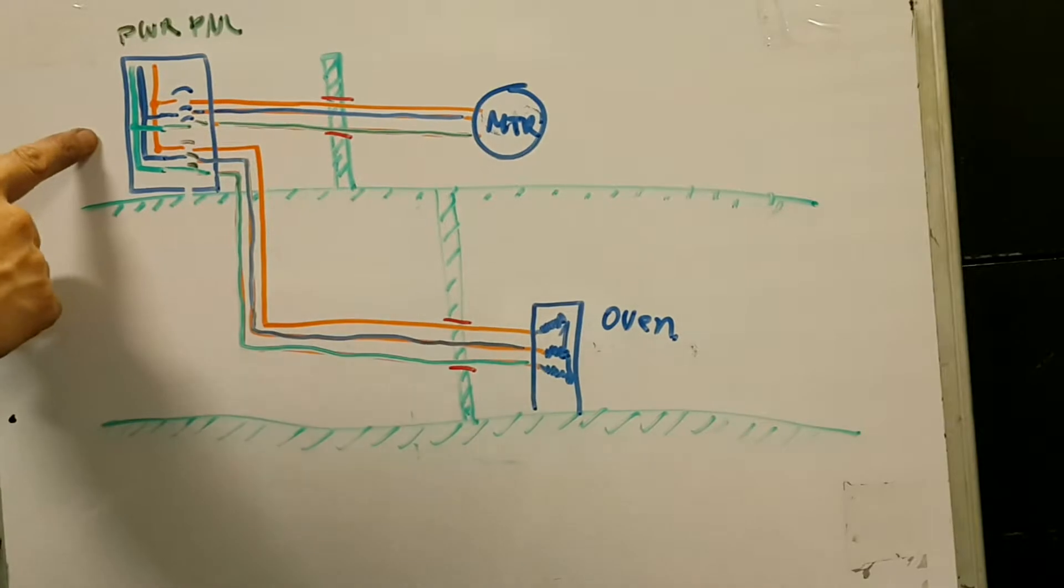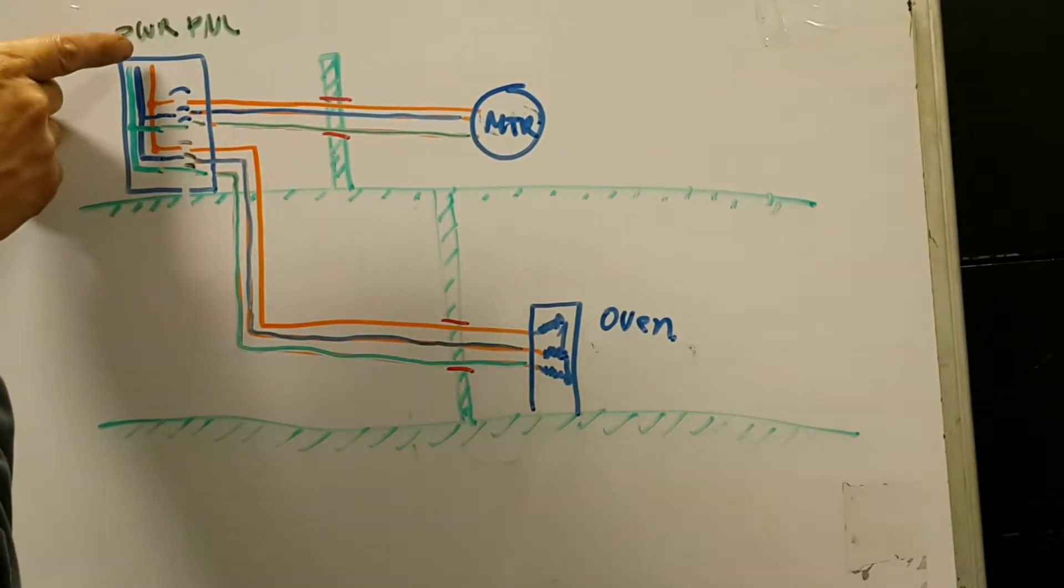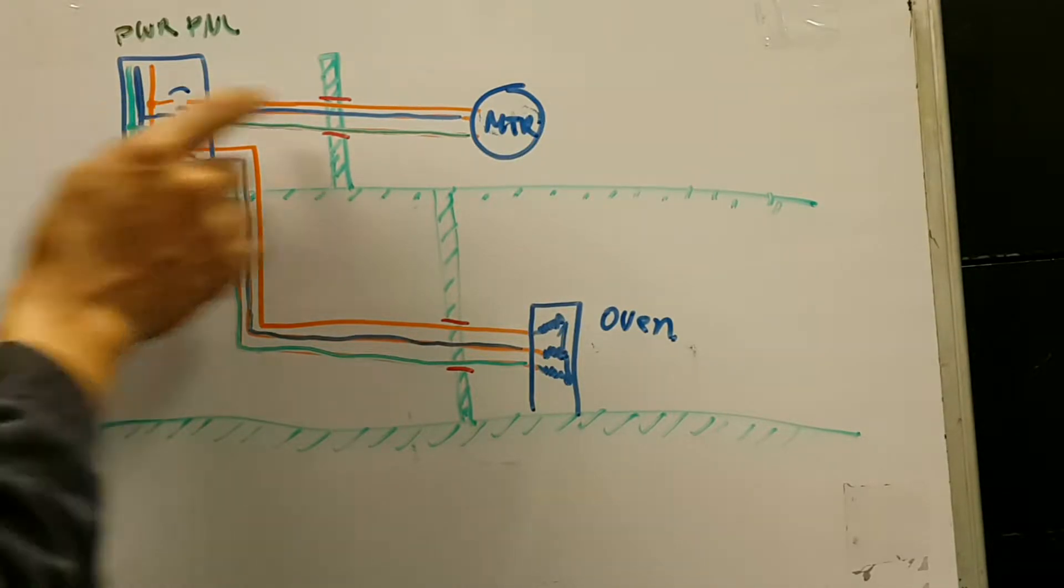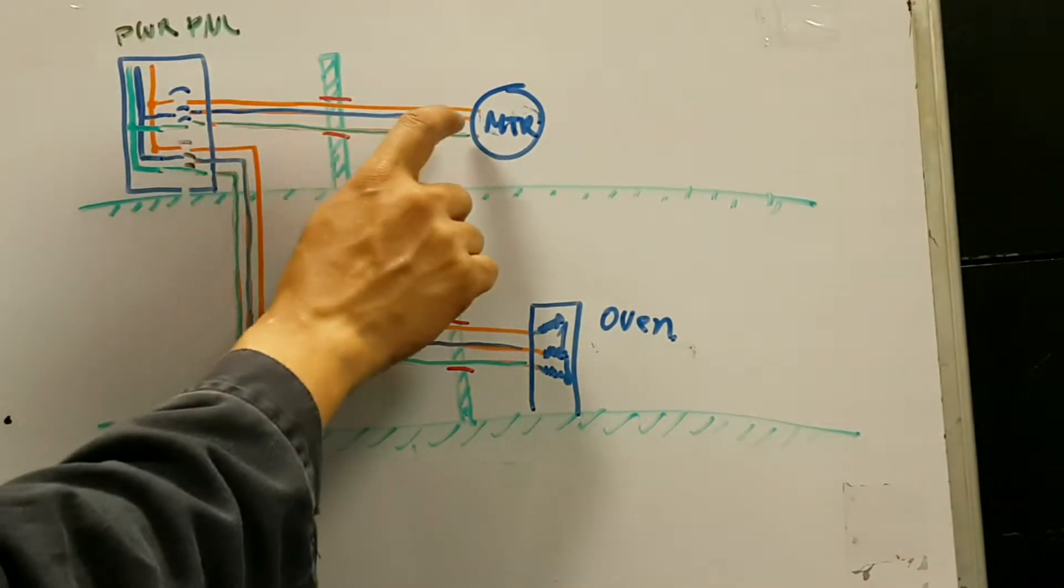So, I got a power panel over here, and I got three phases of power coming in: orange, blue, and green. So when I close this breaker, that motor over there gets those three phases.